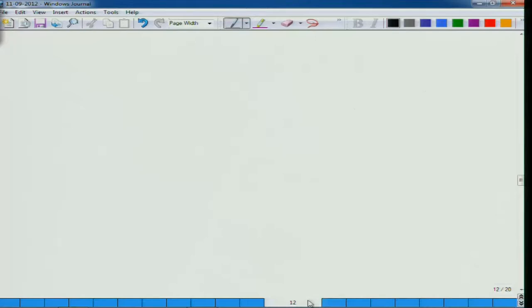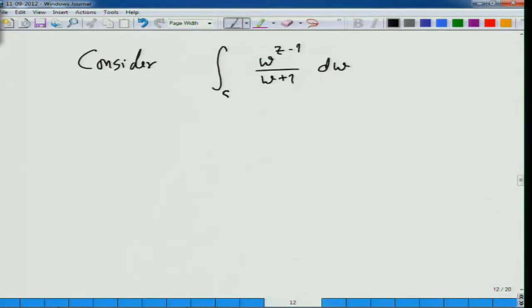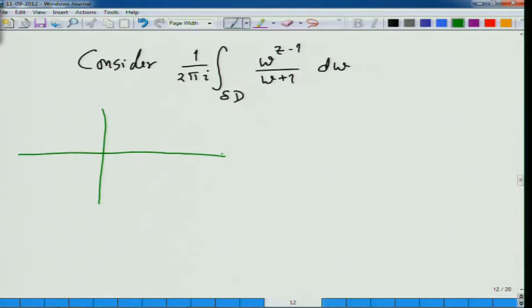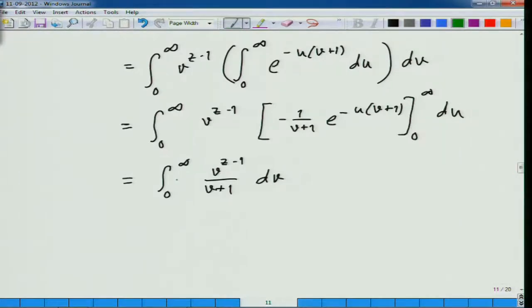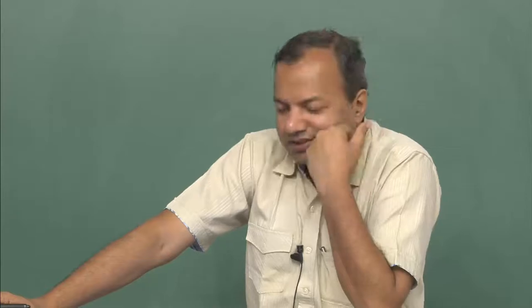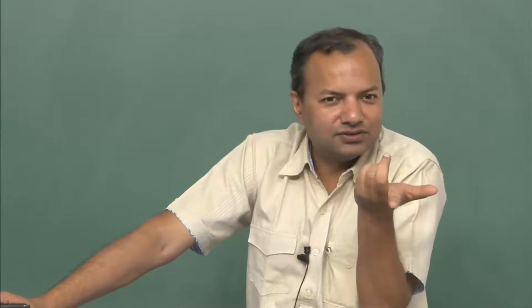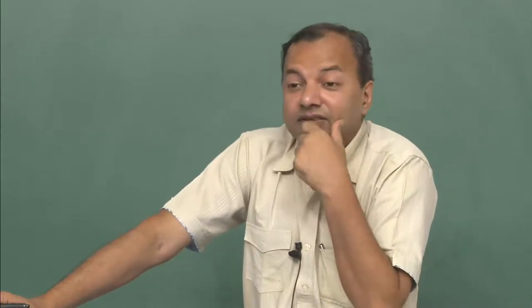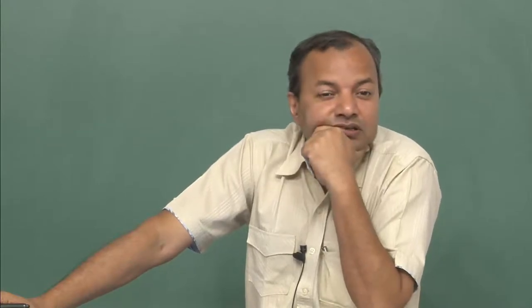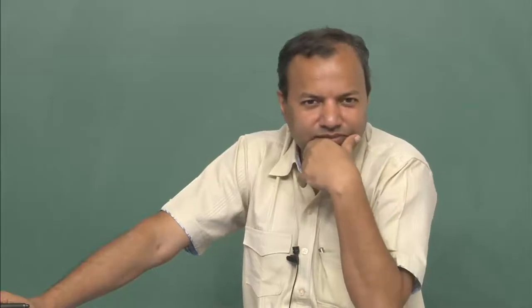To evaluate this integral we consider it over an appropriately chosen domain. We are interested in the integral going from 0 to infinity, but the integrand — is it analytic over the entire complex plane? If z is an integer then yes, except for a pole at w = −1. But if z is not an integer, for example if z = 3/2, then in the numerator we have the square root of w. The square root of w is not analytic over the entire complex plane because the phase changes as you go around a circle.